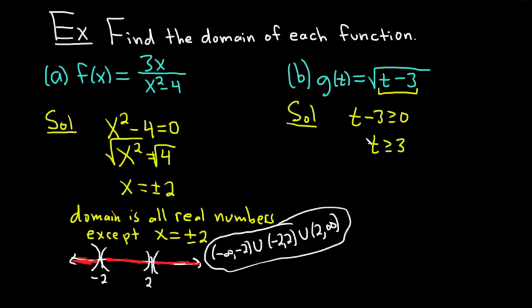The domain is all values of t, such that t is greater than or equal to 3. You could draw a picture and write it in interval notation. So here's the number line. Here's 3. And it's all the numbers greater than or equal to 3. So it's all this red stuff here. And what you normally do is when you include things, you use a bracket. So the answer in interval notation would be bracket 3 to infinity. And that would be the domain for part b.